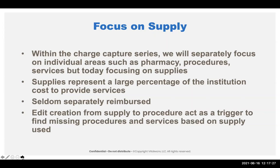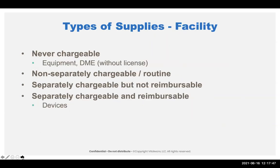We use supplies as an edit creation tool to look for missing procedures. For example, if you use an electrophysiology catheter or mapping catheter and that's on the charges but you don't have an EP study, that's going to point out that we may have lost the procedure. There are four categories of supply types: never-chargeables (equipment and DME — you cannot charge DME without a license), non-separately-chargeable routine items, separately chargeable but not reimbursable items (packaged), and separately chargeable items that are also reimbursable.